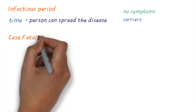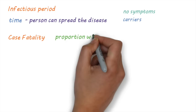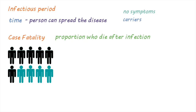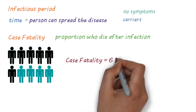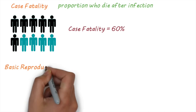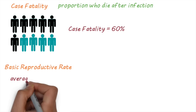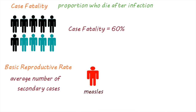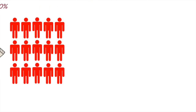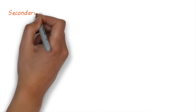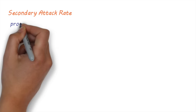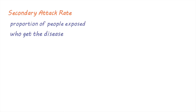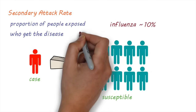Case fatality is a measure of the severity of a disease — it is the proportion of people that die from being infected. For example, if 6 out of 10 people with the disease die from it, the case fatality is 60%. The basic reproductive rate describes how infectious a disease is — it is the average number of secondary cases that result from one infected individual. Measles can have a basic reproductive rate of up to 15, meaning one case can cause up to 15 other cases. The secondary attack rate is the proportion of people exposed to the disease that develop an infection. For seasonal influenza, it's about 10%, meaning 1 out of every 10 susceptible people exposed will develop the infection.